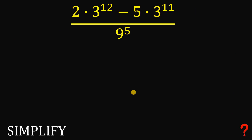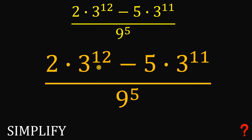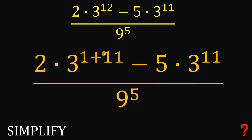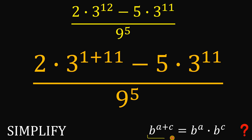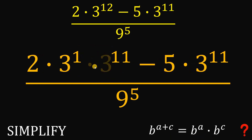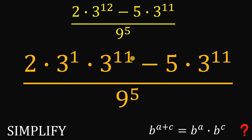Let's simplify this without using any calculator. Let's focus on the exponent 12, because 12 is greater than 11. We can write 12 as 11 plus 1. At this point we will use the laws of exponents: when we have b raised to the power of a plus c, this can be written as b raised to the power of a multiplied by b raised to the power of c. So 3 raised to the power of 12 becomes 3 raised to the power of 1 times 3 raised to the power of 11.